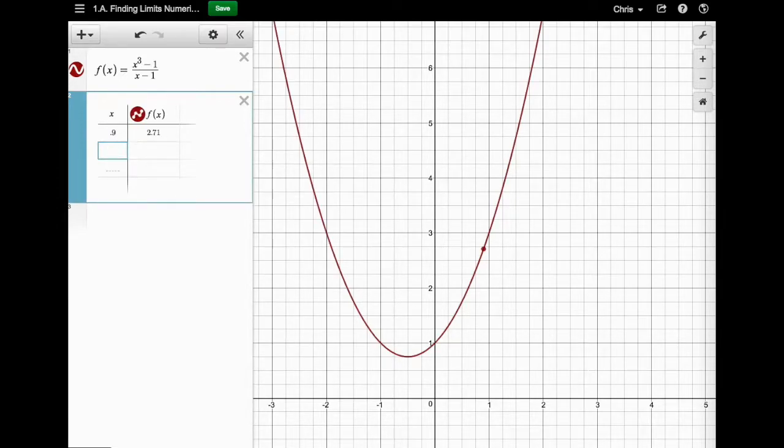But then we want to get closer to one, but still be less than one. So closer than this 0.9, you could do something like 0.99. And hopefully you can see that we're going from 2.71 to this 2.9701.